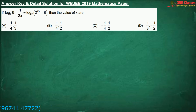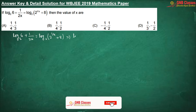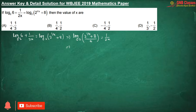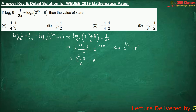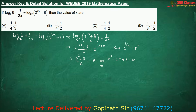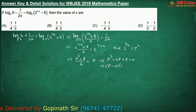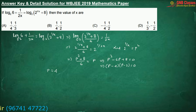Here, they have given us to find out the value of x. Let us assume that 2 to the power 1 by x is p squared. From here, if we factorize, we get either p equals 4 or p equals 2.